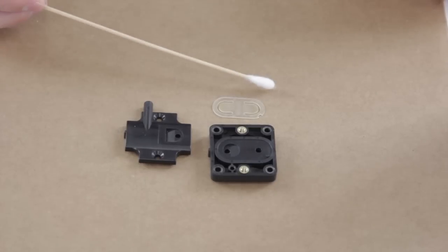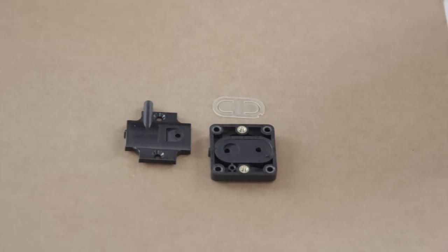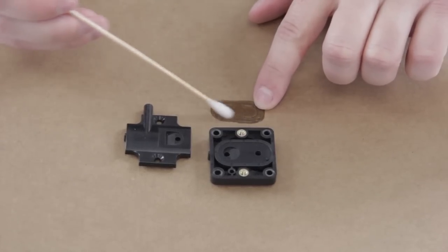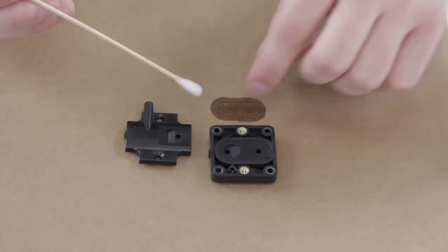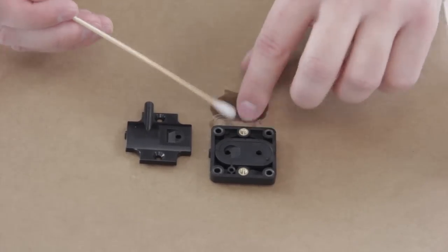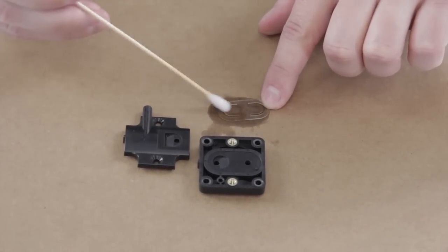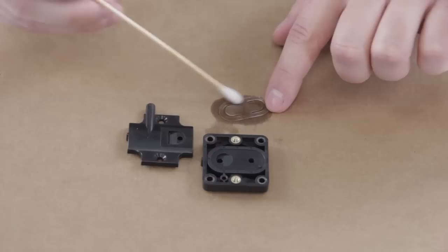Next we're going to use a Q-tip and some alcohol and clean off the valve. You want to give it a good clean on both sides. That will help to remove the residue and the flux that is on the valve.